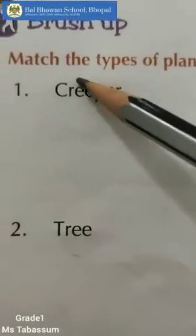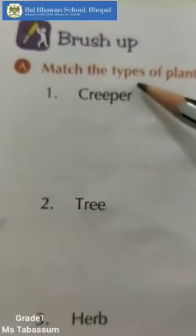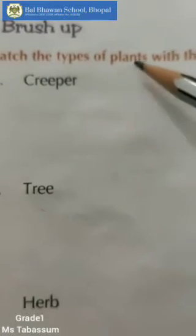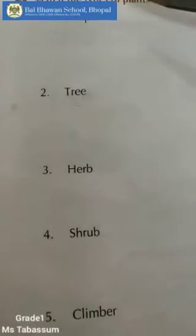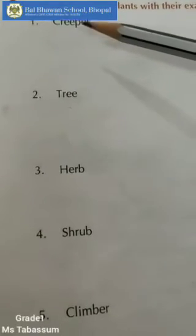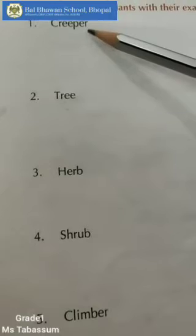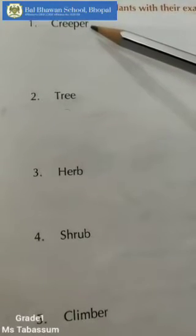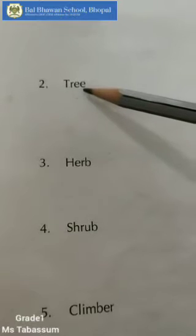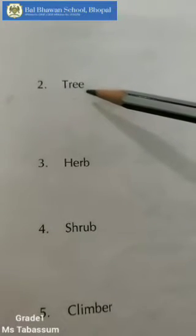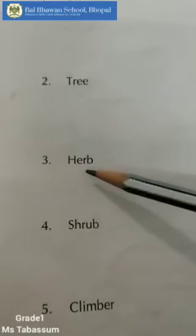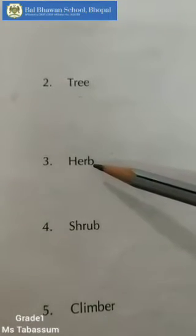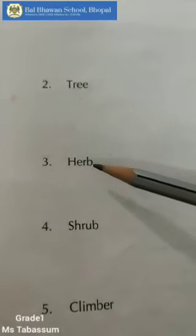Match the types of plants with their examples. These are the types of plants. Let's read. Number 1: Creeper — a plant which grows along the ground. Number 2: Tree — very tall and big plants are called trees. Number 3: Herb — small plants with soft and weak stems. They are called herbs.